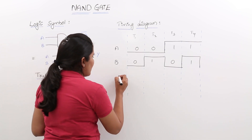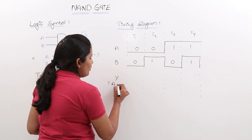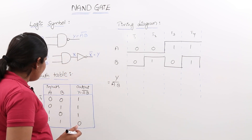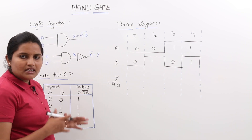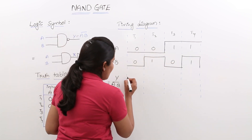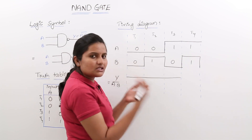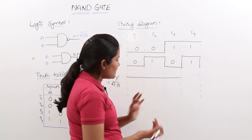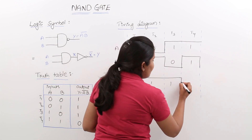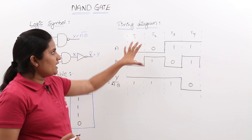Now coming to the output Y, where Y equals A into B whole bar. In T1, T2, and T3, at least one 0 is present at the input, so the output goes high in all these time cycles. Whenever at least one 0 is there, without checking anything further, output is high. At T4, all inputs are high, so the NAND gate output is 0. This is the timing diagram for the NAND gate.